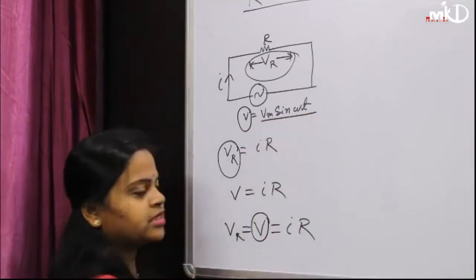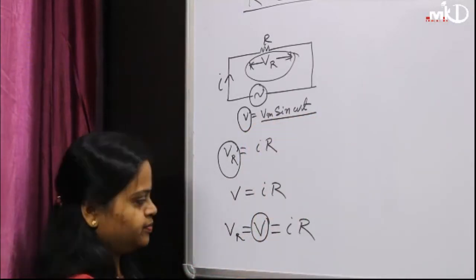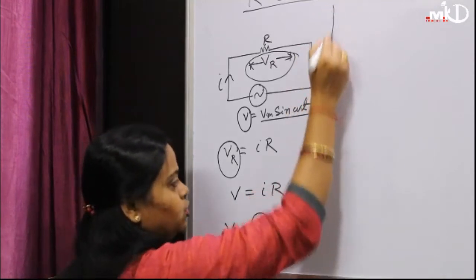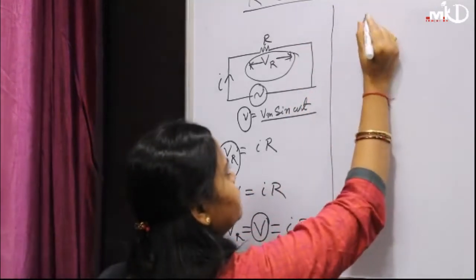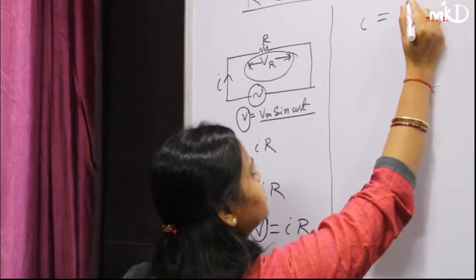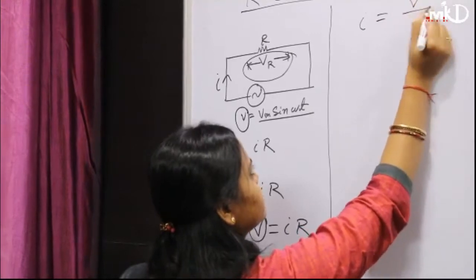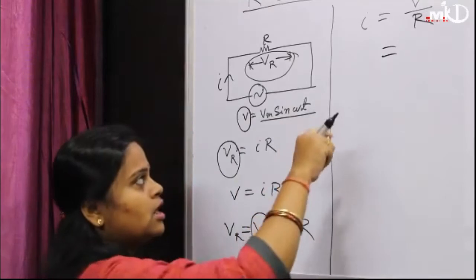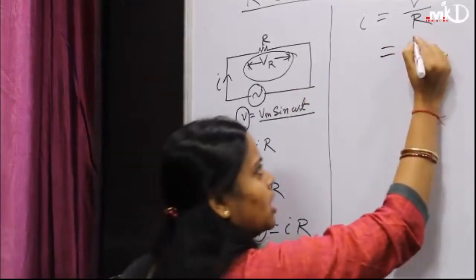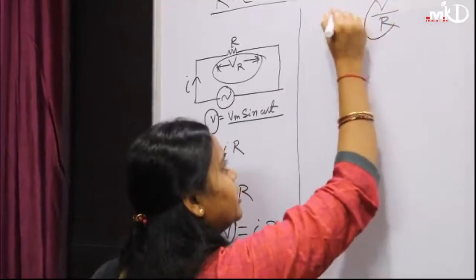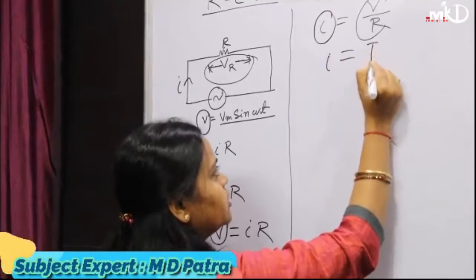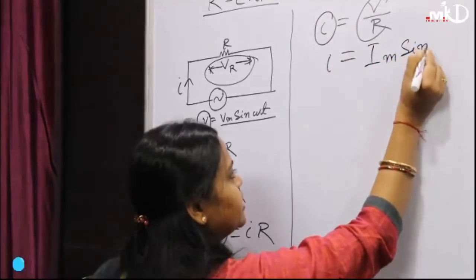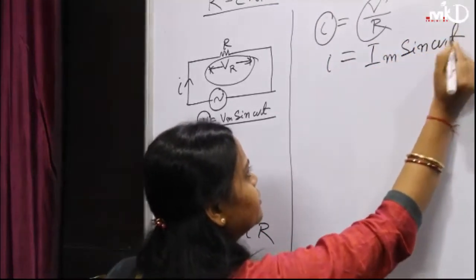Since V = Vm sin(ωt), we can write down the value of I. The value of I is equal to Im sin(ωt).